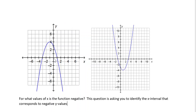We're looking for the parts of x where the y values drop below the x-axis, because that's where the function would have negative y values. Anything below the x-axis is the part of the graph that represents the negative part. But when you look at the interval, you're basing the interval on the x-axis.